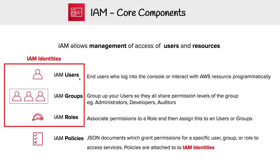A user is an end user who can log into the console or interact with AWS resources programmatically. Then you have groups — that's when you take a bunch of users and put them into a logical grouping so they have shared permissions; that could be administrators, developers, auditors, whatever you want to call that. Then you have roles, and roles have policies associated with them — that's what holds the permissions. You can take a role and assign it to users or groups.